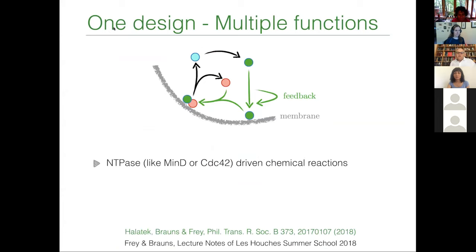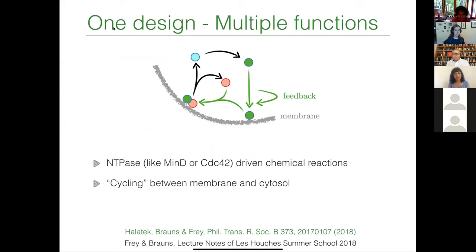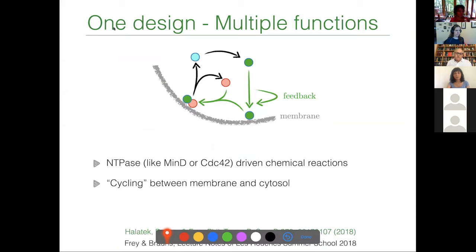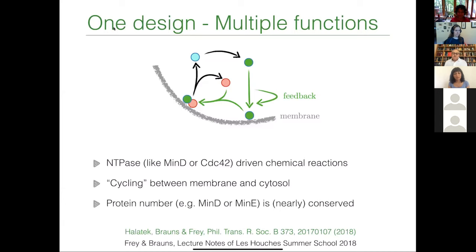This is actually a very general design principle. At the heart of both systems, there's an NTPase like MIN-D or CDC-42 driving the chemical reactions — the element in the cycle that drives the system off equilibrium and breaks detailed balance. On top of that, there's cycling between the membrane and the cytosol via various types of chemical reactions, which differ across species like E. coli, yeast cells, or starfish. Importantly, protein number on the timescale of about a minute is actually a conserved quantity — there's neither production nor degradation of proteins on that scale.